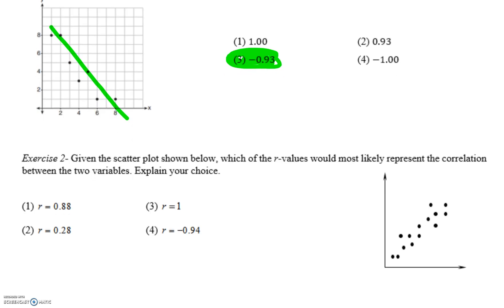For the second one, for here, we want to figure out again which of the R values most likely represents the correlation between the two variables. So as we read left to right, we're going to notice that our lines go up, or our points form a line that would be going up, so it can't be 4 because that's negative. It can't be 3 because it's not a perfectly straight line. So now we're between choice 1 and 2. Do you see how all those dots are fairly close to each other? So that's going to be a strong relationship. And the closer you are to 1, the stronger you are. So it has to be 0.88.